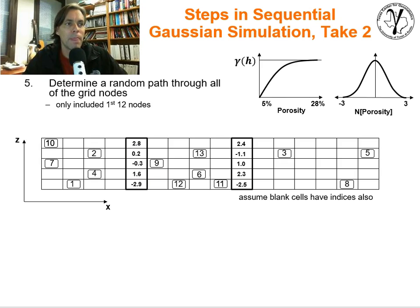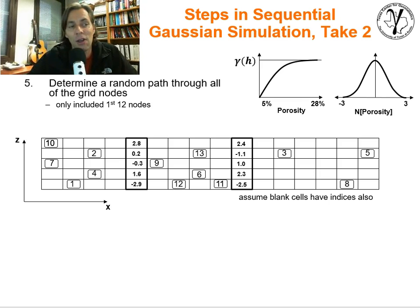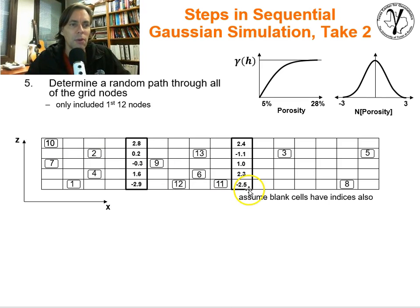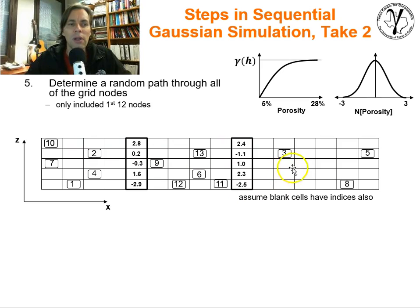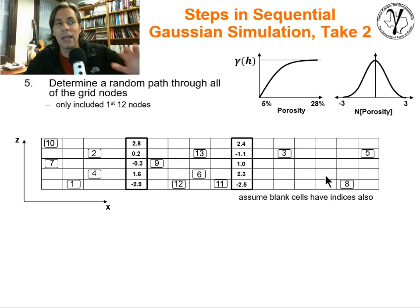Now we transform the data values to normal space — standard normal, zero mean, one variance, Gaussian distributions. So our values have all been transformed; we transform this upscaled distribution to Gaussian. Go ahead and calculate the variogram — we calculate and model the variogram in the primary directions. We determine a random path through the grid nodes. I got lazy on this slide and went up to 13 nodes rather than filling in every cell — but you can imagine all the empty cells would also have values, it's a random path visiting all cells, and eventually every cell that doesn't have data will be visited.